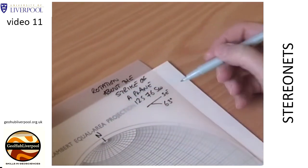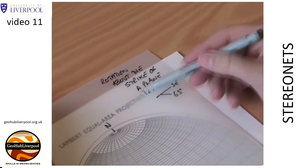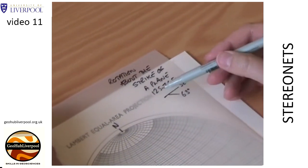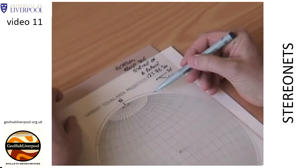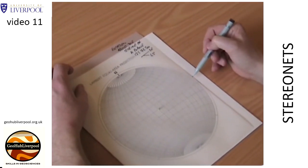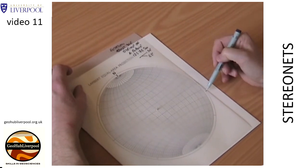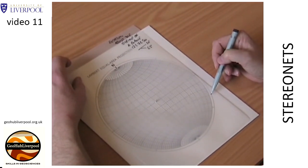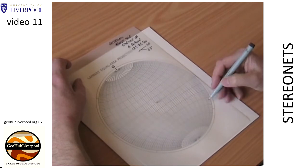We will need to plot the plane as a great circle and as a pole. Count 125 degrees around the primitive circle. Remember, heavy lines are at 10 degrees and subdivisions are at 2 degrees. Mark on the tracing paper the strike of the bedding plane.